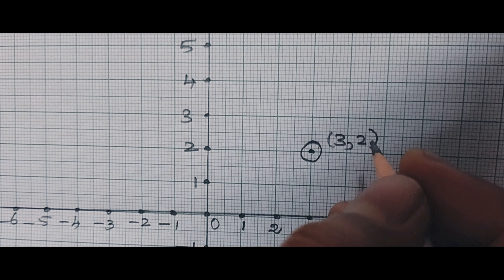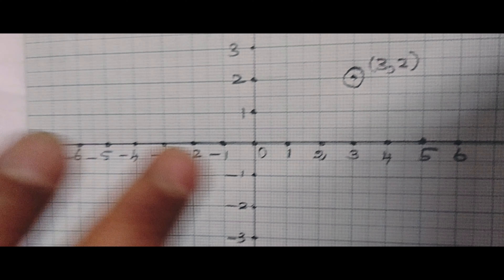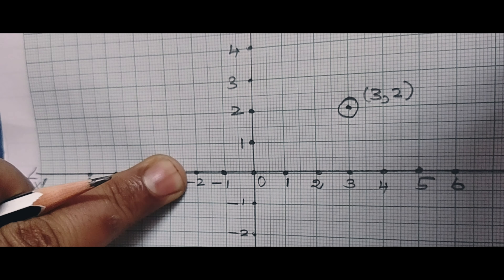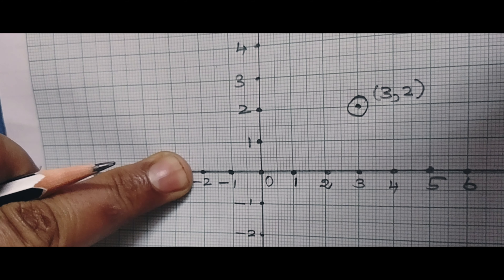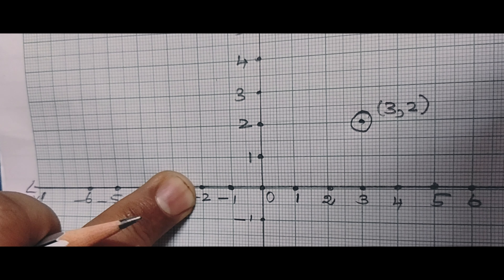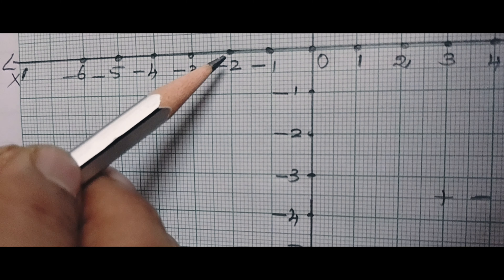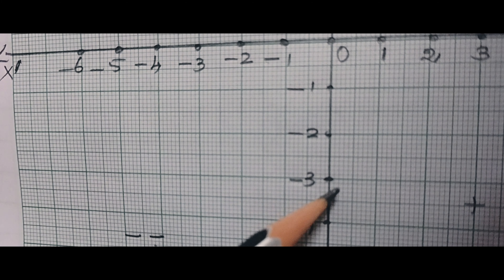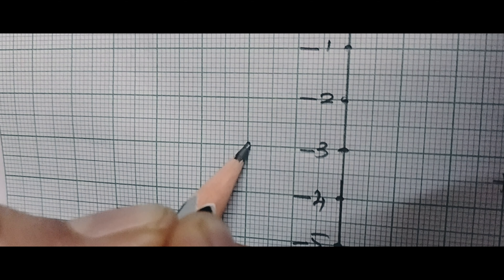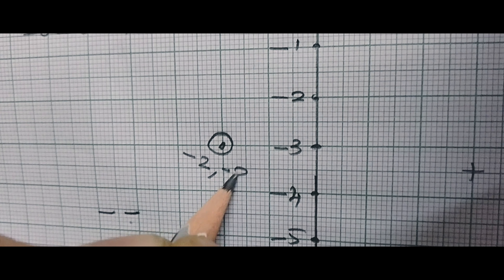Next we have to mark Q(-2,-3). X-axis is minus, so come to this side — that is minus 2. Y-axis is also minus 3. So minus 2, minus 3 — it must be in the third quadrant. Here it is minus 2 on X and minus 3 on Y.